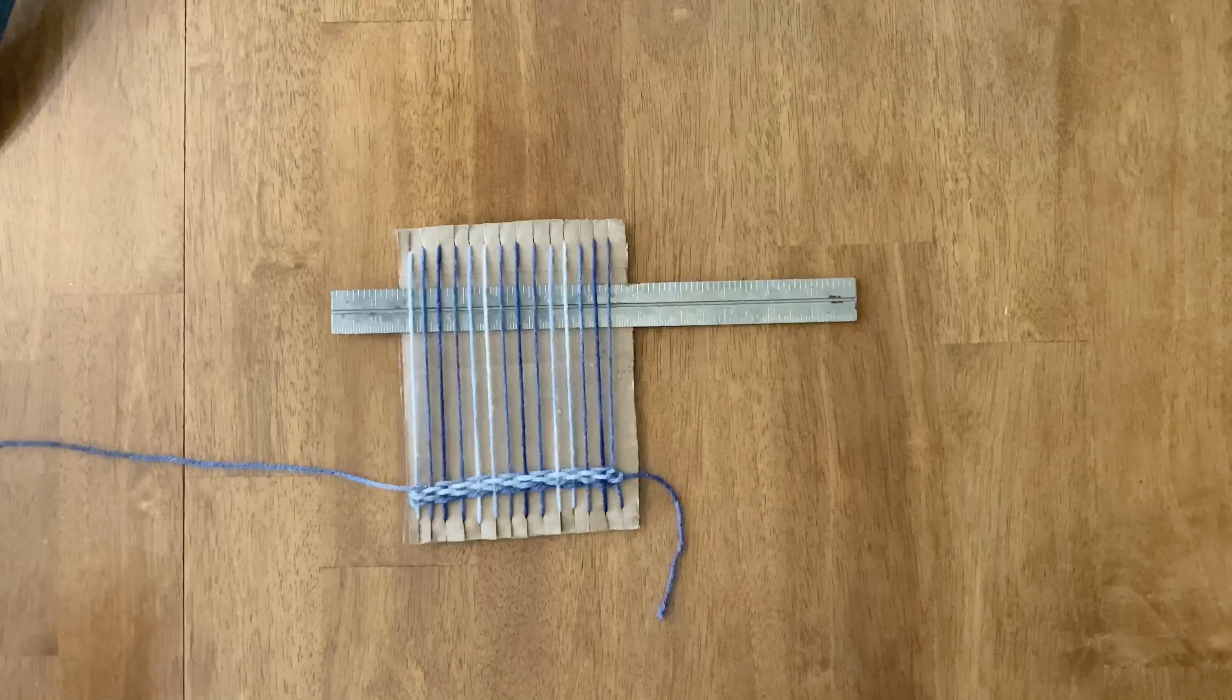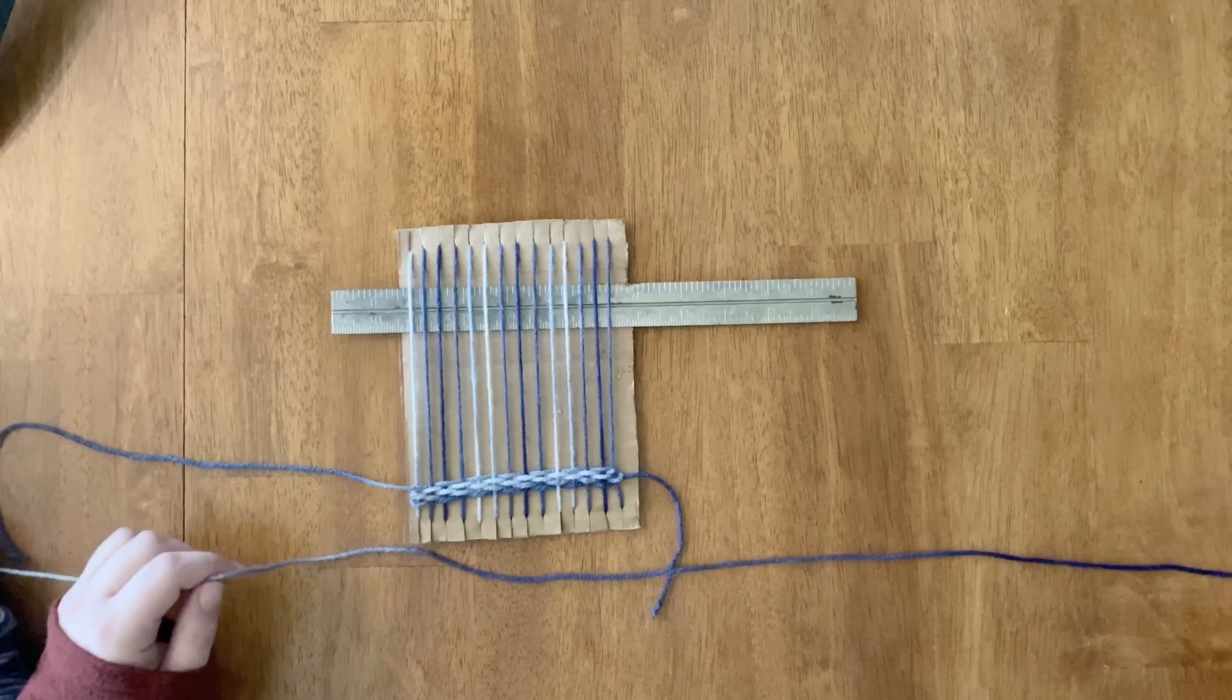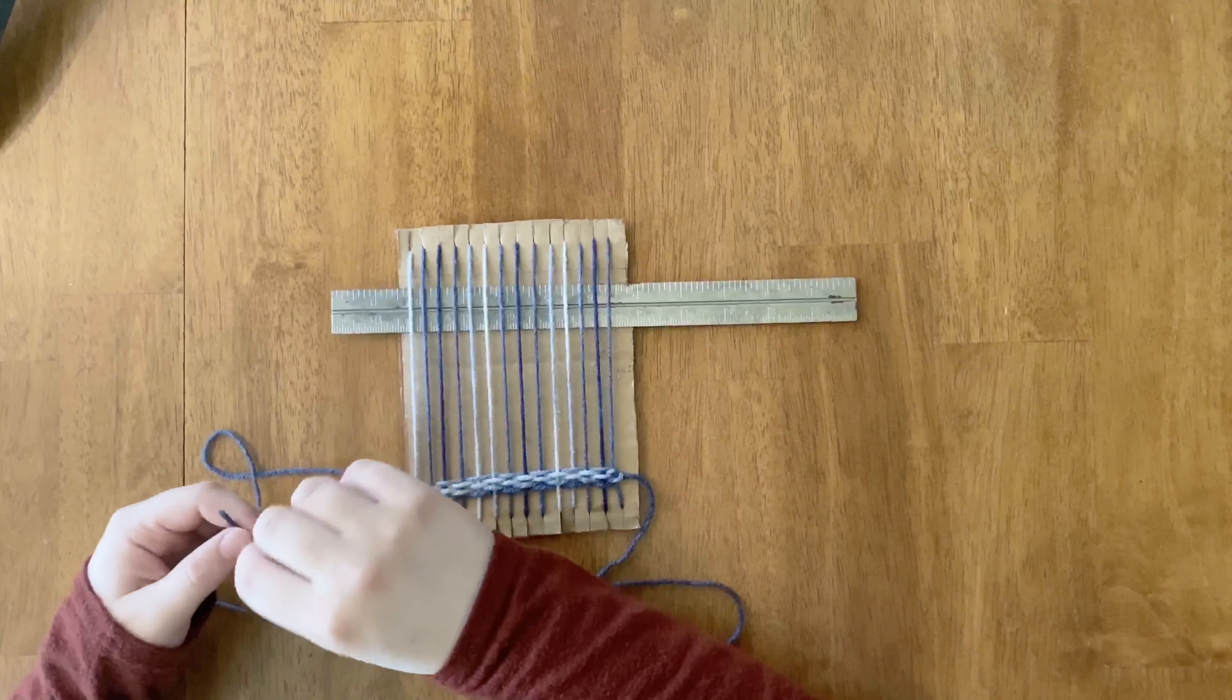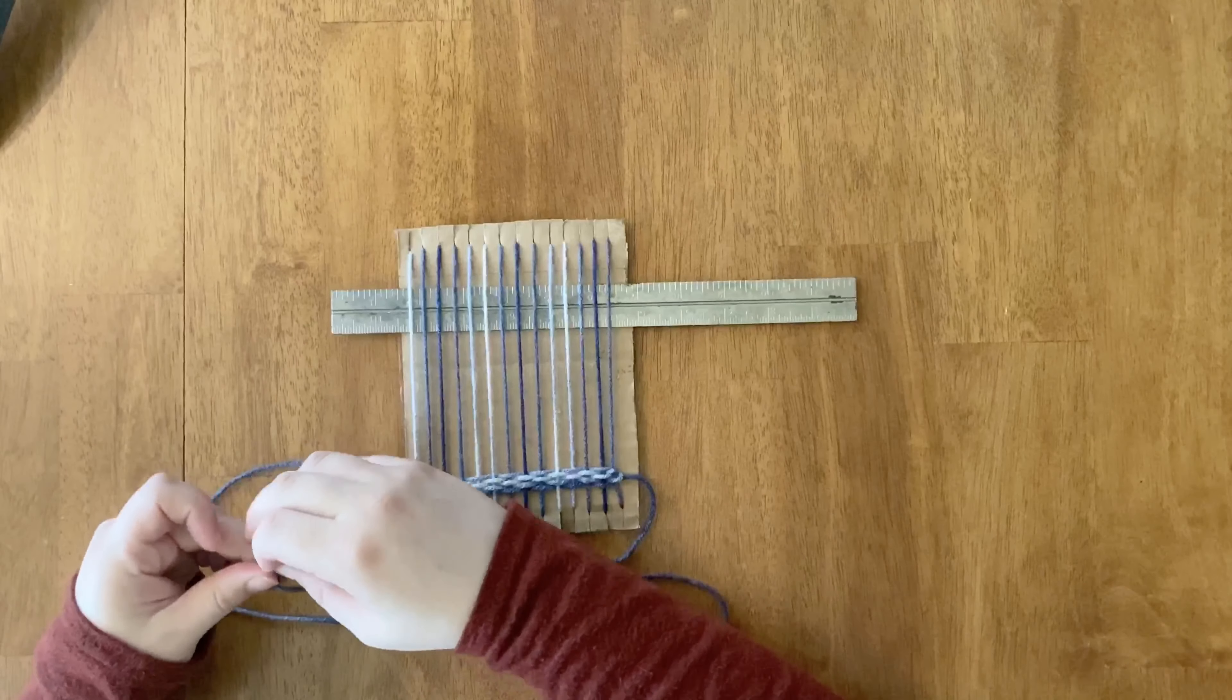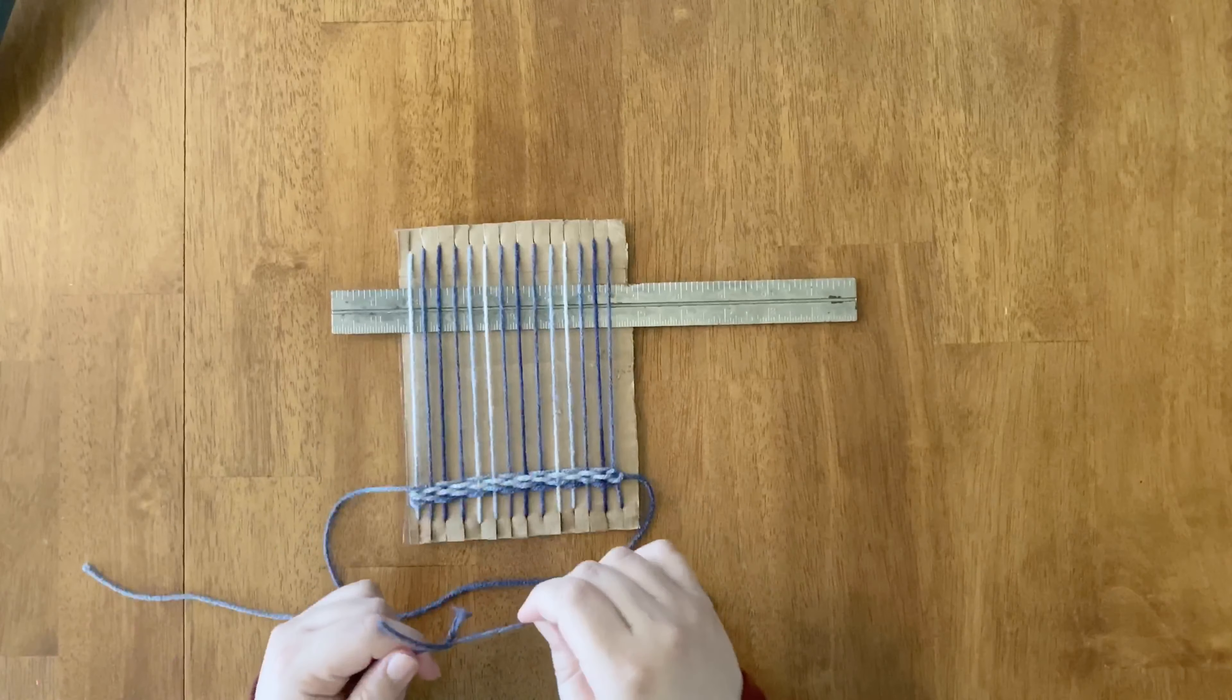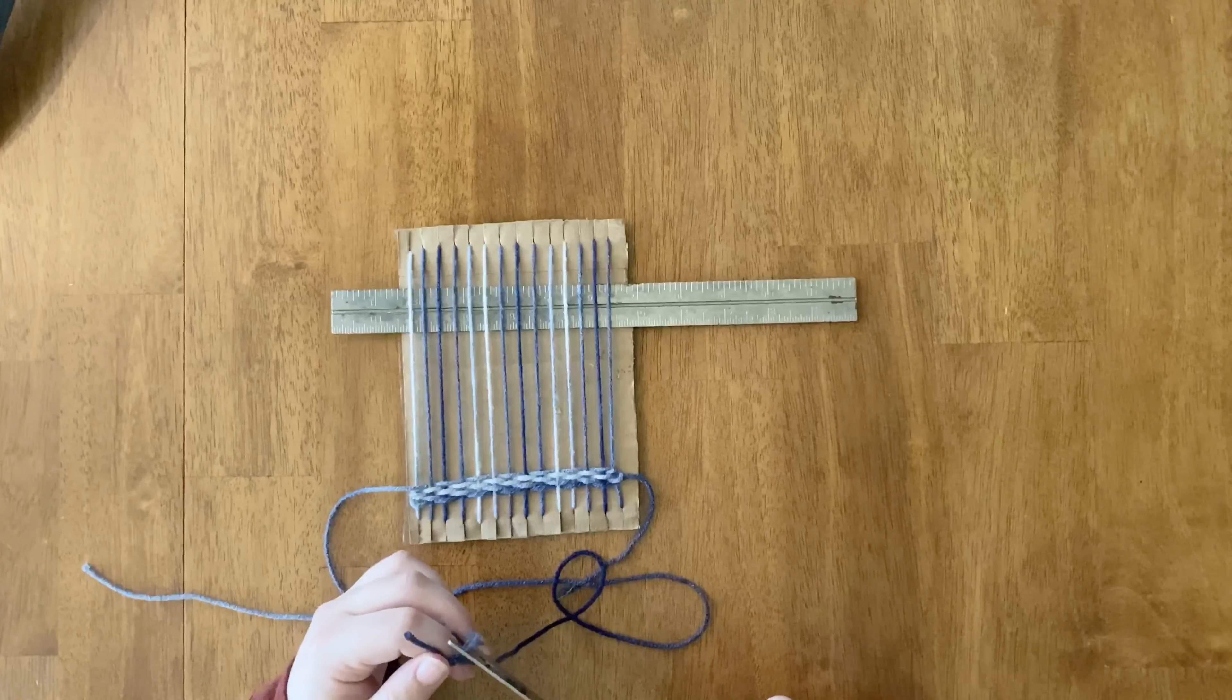When you start nearing the end of your weft string and you need to add more yarn, cut some yarn off of your supply and attach it by tying a knot. I use a double knot but you can use whatever kind of knot you know how to tie. Make sure it doesn't move when you pull on it and then you can trim the bunny ears of your knot.